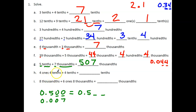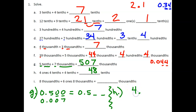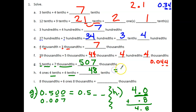Now looking at H: we have 4 ones and 4 tenths plus 4 tenths. The 4 ones will stand alone. Adding our tenths first: 4 tenths plus 4 tenths equals 8 tenths. Then 4 ones equals 40 tenths. So 40 tenths plus 8 tenths is 48 tenths. We say the number without the decimal, then name the place value unit of the last digit: 48 tenths equals 4.8.